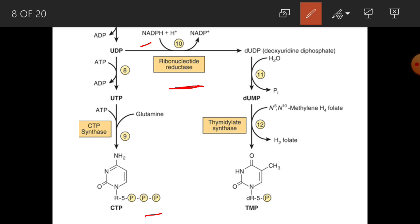In the presence of ribonucleotide reductase and NADPH, we get dUDP — deoxyuridine diphosphate — which is destined for DNA. From dUDP we get dUMP, and then in the presence of N5,N10-methylene tetrahydrofolate, dihydrofolate is removed and we get TMP — thymidine monophosphate — the nucleotide required for DNA synthesis.